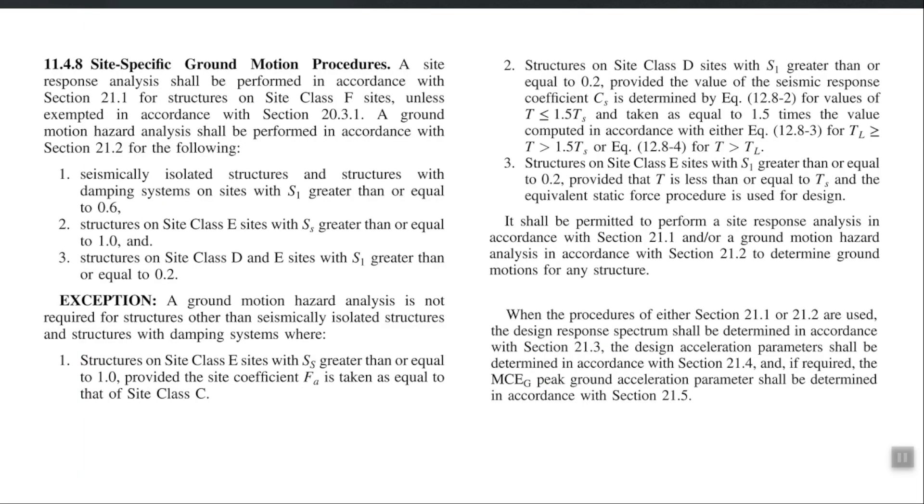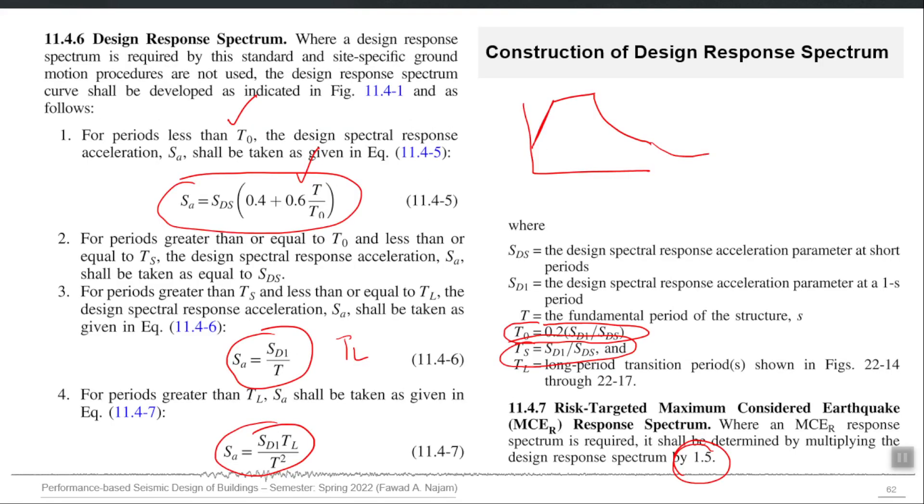This is for ASCE 7-16, but every code gives you an equation like this, which is the function of hazard parameter of your site. You put them and plot that spectrum. UBC 97 used to have an equation which was not the function of SDS and SD1. It was a function of CA and CV factors, and those two factors depend on your zone and your site class. Z factor, which is again dependent on the PGA value ranges, and then site class, you select CA and CV. If you have your CA and CV you can construct that.